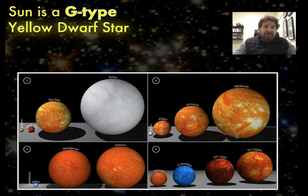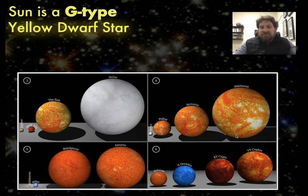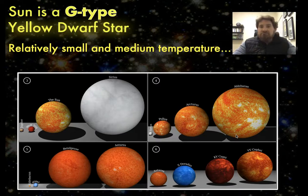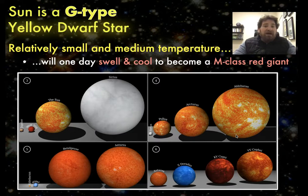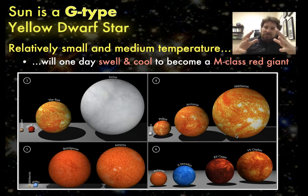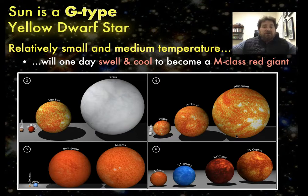The sun is a G type yellow dwarf star. That is its official title as a star. What it basically means is that it is a relatively small medium temperature star compared to the other types of stars, but it will not always be a G type yellow dwarf star. In the distant future, some 5 billion years from now, the sun is going to begin to swell in size.